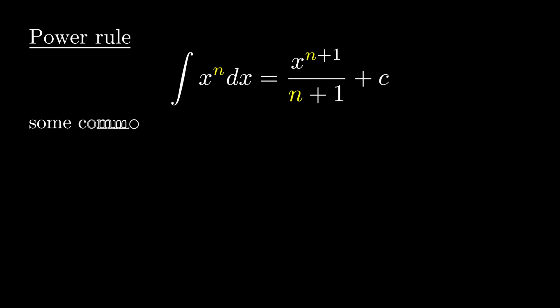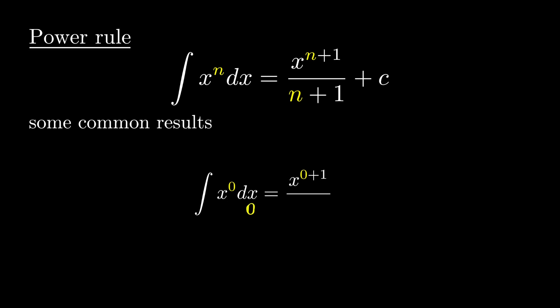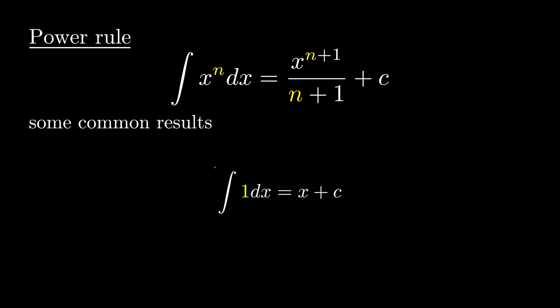Let's take our first question and replace the value of n. Integration of x^0 dx — replacing n with 0, we get x^(0+1) over (0+1) plus c. If we rearrange, we get x plus c.